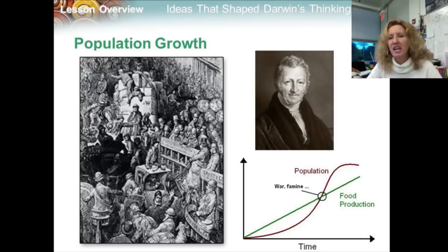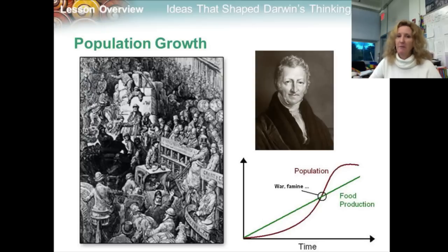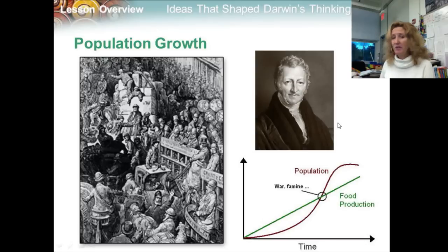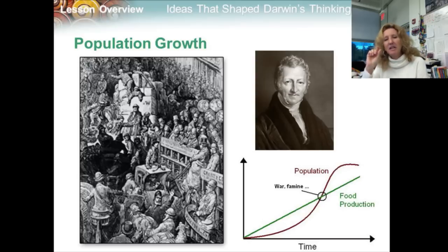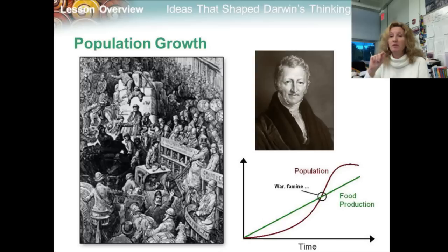He reasoned that if the human population grew unchecked, there wouldn't be enough living space and food for everyone — hence, war, famine, and disease. Darwin realized that Malthus's reasoning applied even more to other organisms than to humans. For example, an oak tree can produce thousands of seeds each summer, and one oyster can produce millions of eggs each year. However, most offspring die before reaching maturity, and only a few of those that survived managed to reproduce. Darwin had become convinced that species evolved, but he needed a scientific explanation based on natural processes to explain how and why evolution occurred. When Darwin realized that most organisms don't survive and reproduce, he wondered which individuals survived and why.